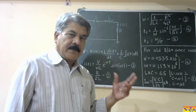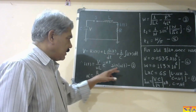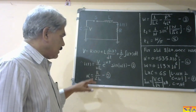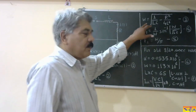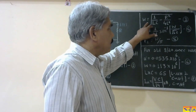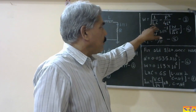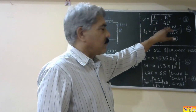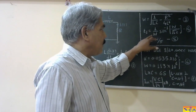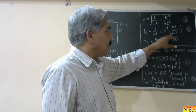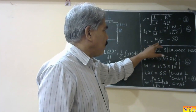In equation one, alpha is R/2L (equation 2). Omega, the frequency of oscillation, is given by: ω = √(1/LC − R²/4L²) (equation 3). The rise time t1 is: t1 = (1/ω) · sin⁻¹(ω / √(1/LC)) (equation 4). The decay time t2 is: t2 = π/ω (equation 5).